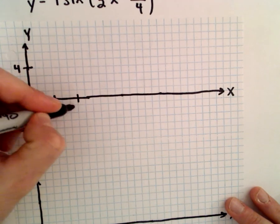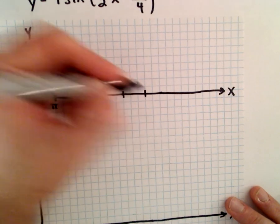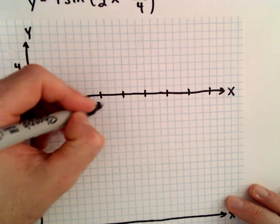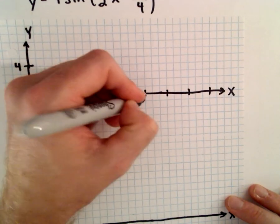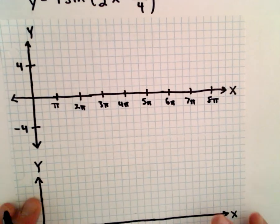So pi, 2 pi, 3 pi, 4 pi, 5 pi. We've got 6 pi, 7 pi, 8 pi.